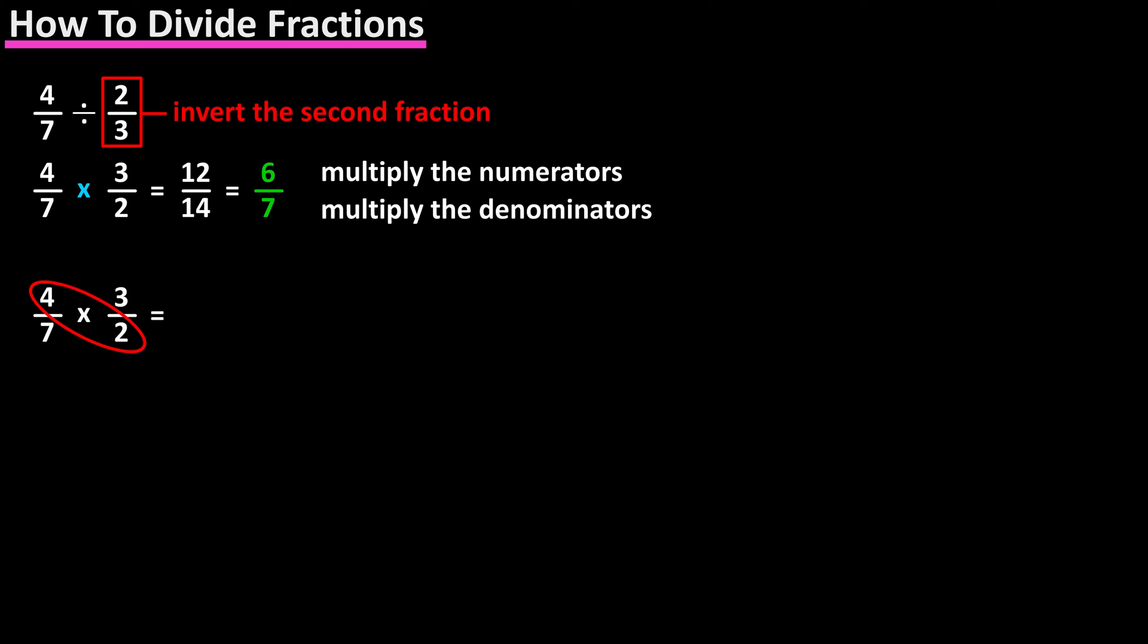In this problem, the 4 and 2 have a common multiple of 2, so 2 goes into 4 two times, and 2 goes into 2 once. And we get the same answer as before, with fewer steps.